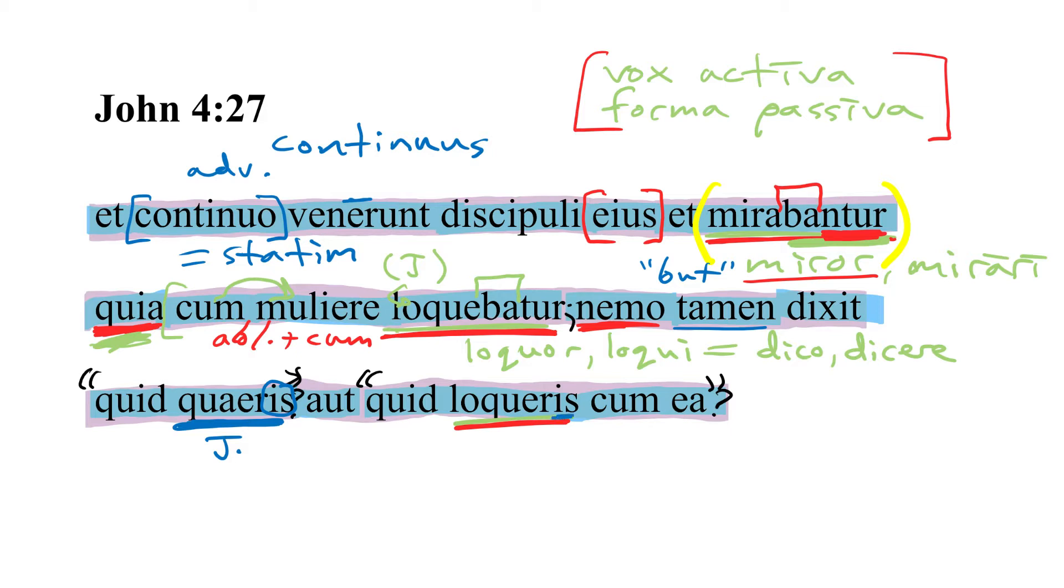And we know from context that this is referring to Jesus because look at this next question. Aut, or, quid. Why? And this is a great example of these two next to each other, the fact that quid sometimes can mean what, sometimes can mean why. It depends on context, so you have to make the decision as the interpreter.